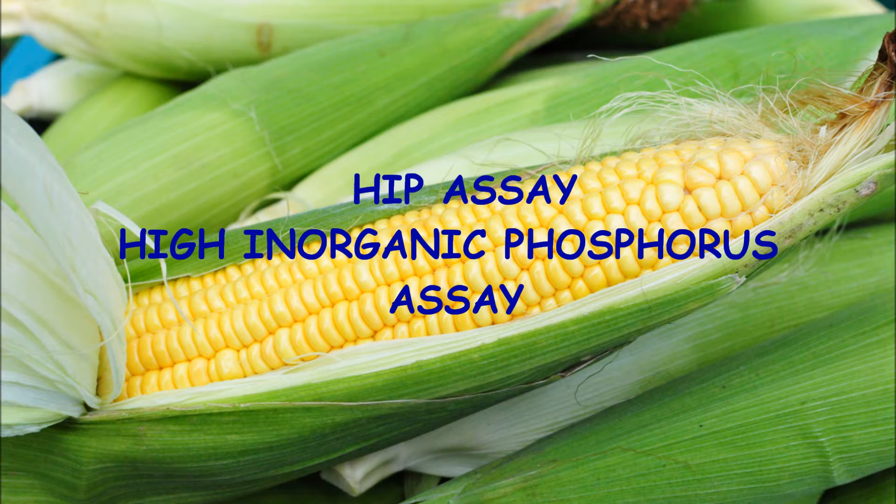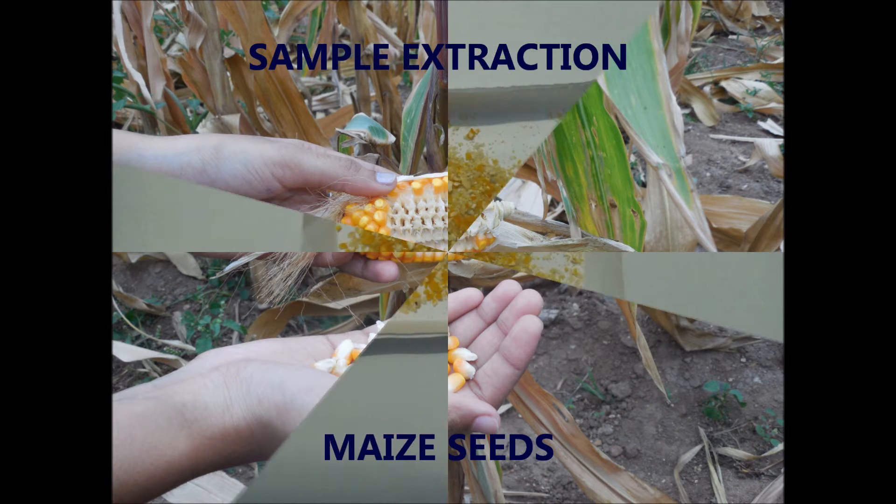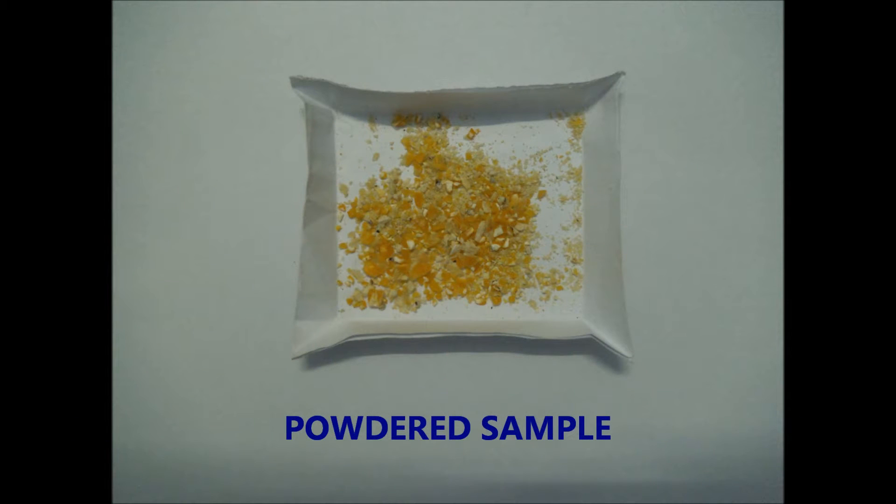High Inorganic Phosphorus Assay is used to estimate the amount of free phosphorus. For sample extraction, rice seeds were collected and dried so that the moisture content lies between 5-12%.